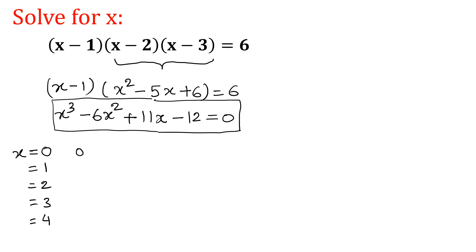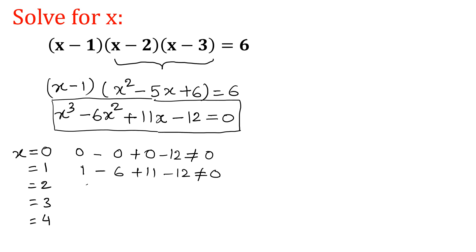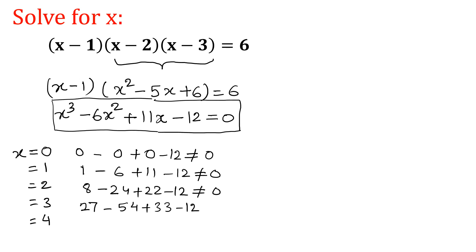Putting x = 0: 0 minus 0 plus 0 minus 12 — not equal to 0. Putting x = 1: 1 minus 6 plus 11 minus 12 — not equal to 0, value is minus 6. Putting x = 2: 8 minus 24 plus 22 minus 12 — not equal to 0. Putting x = 3: 27 minus 54 plus 33 minus 12 gives 60 minus 66, which is minus 6 — not equal to 0.